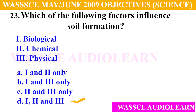Question 23: Which of the following factors influence soil formation? I. Biological, II. Chemical, III. Physical. The possible answers are A. I and II only, B. I and III only, C. II and III only, D. I, II, and III. And the answer is D, I, II, and III.